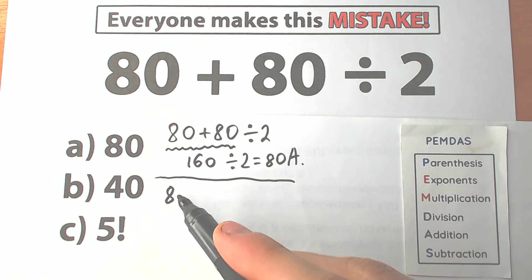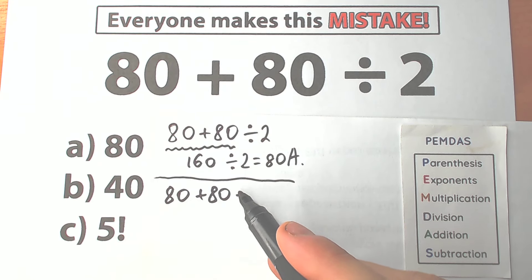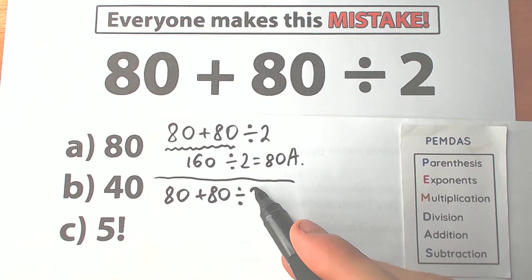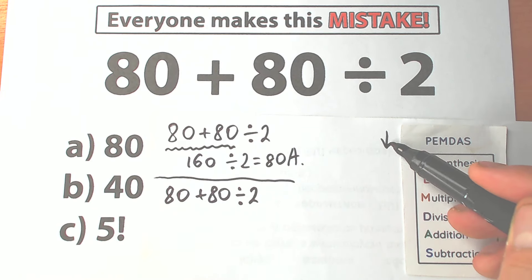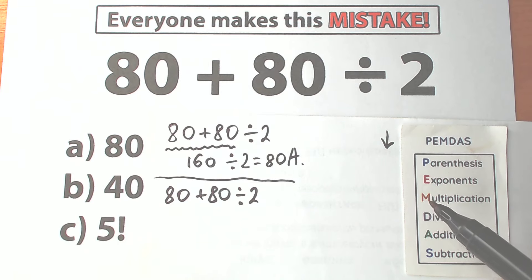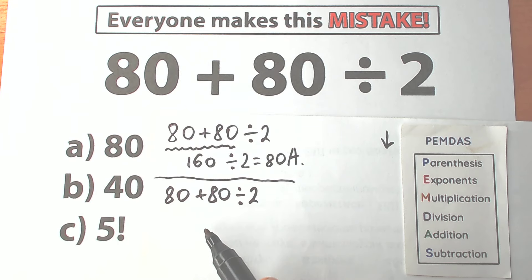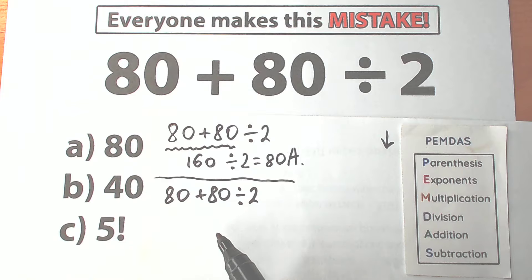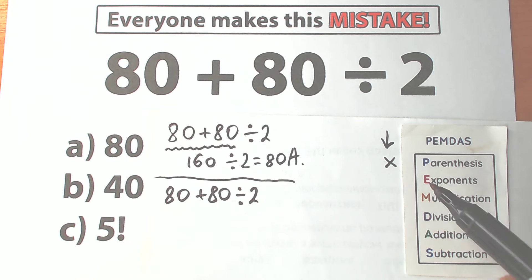The first solution — a lot of students go from left to right and don't know about order of operations, getting 80. But now let's solve this question according to PEMDAS. We have our challenge: 80 plus 80 divided by 2. PEMDAS works from the top to the bottom, so let's go through the steps. The first step is Parentheses. Do we have any parentheses? In our case we don't, so we skip this part.